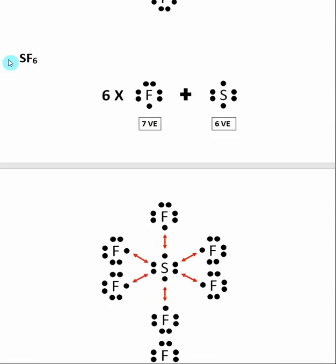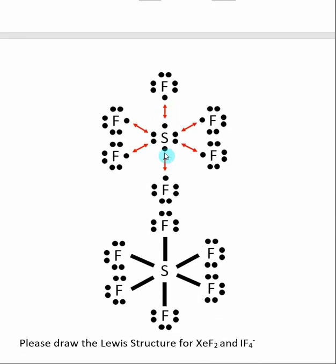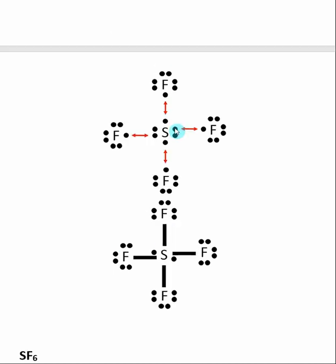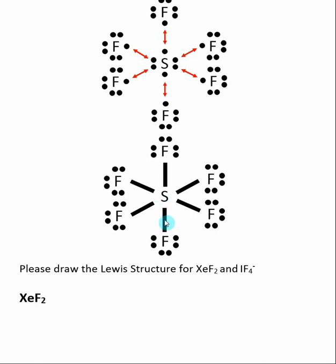In SF6 we have six fluorines. Sulfur only has six valence electrons, so every electron in sulfur must connect with an unpaired electron on a fluorine. The two unpaired electrons get used, and then both sets of lone pair electrons get used to bond with the remaining four fluorines. When we're done, all of sulfur's valence electrons have gone into bonding: six bonds and no lone pair electrons. Sulfur ends up with twelve electrons around it — that is the maximum, and if you go beyond that you have done something wrong.